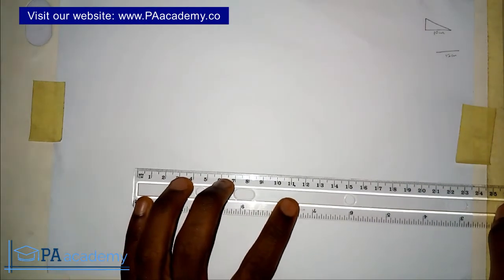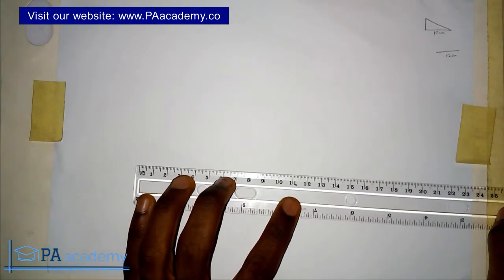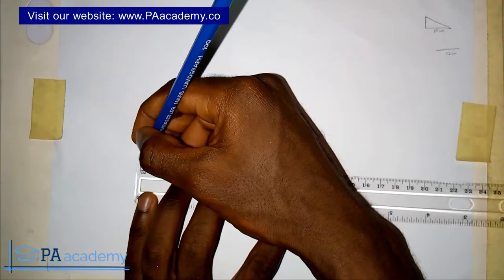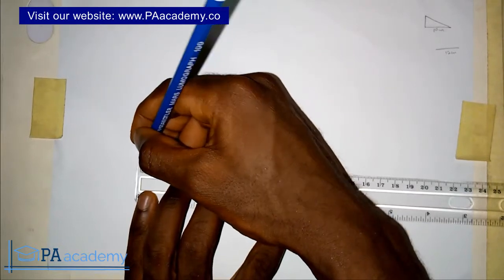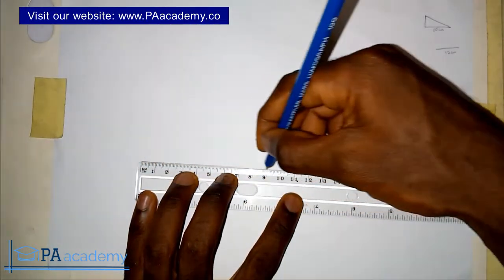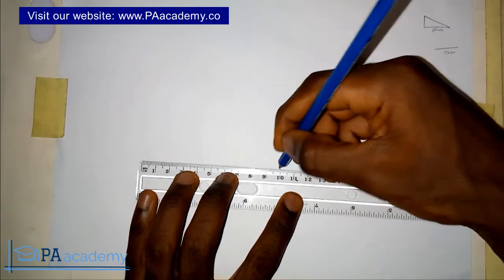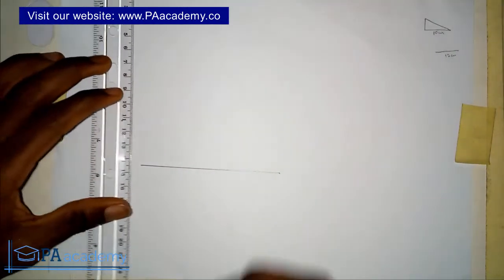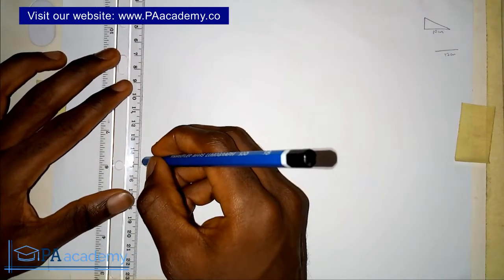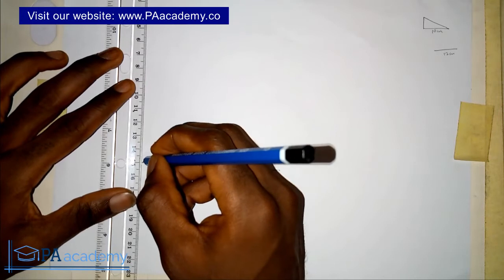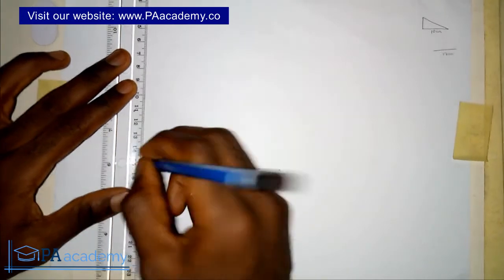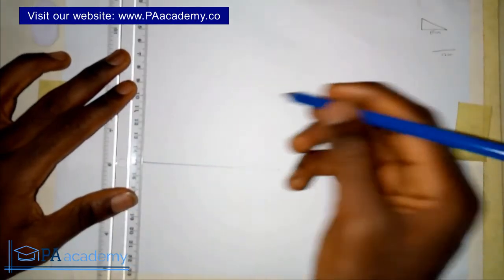To do this, let me draw the triangle we're going to be using. I'm going to draw a right angle triangle with a base of 10 centimeters and a height of 6 centimeters.